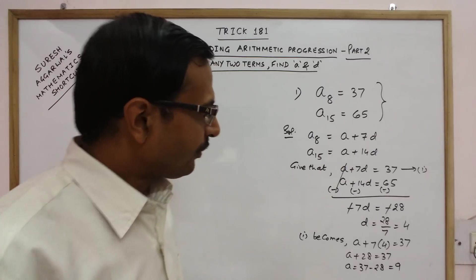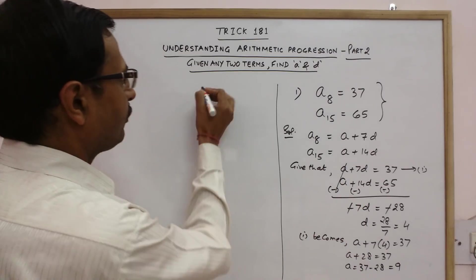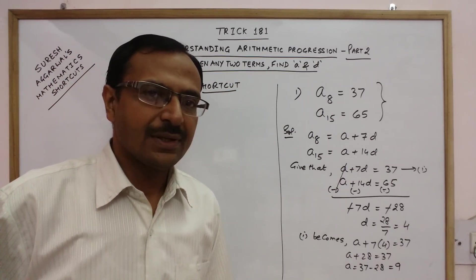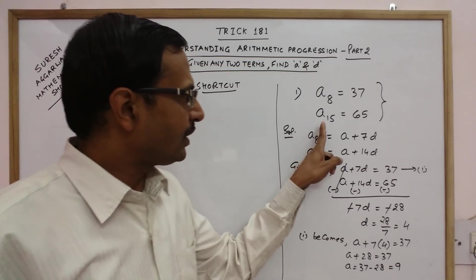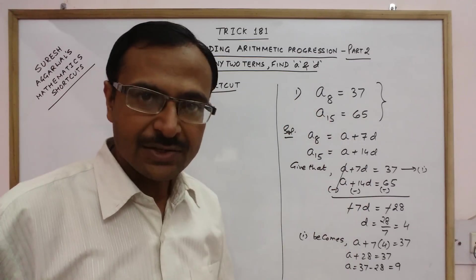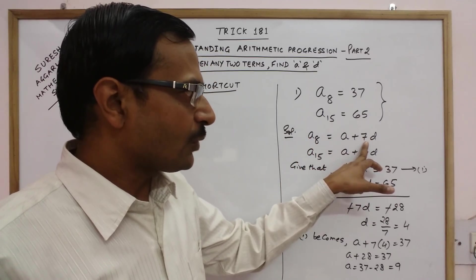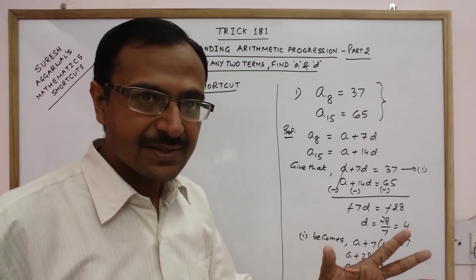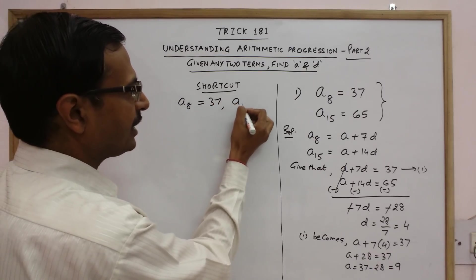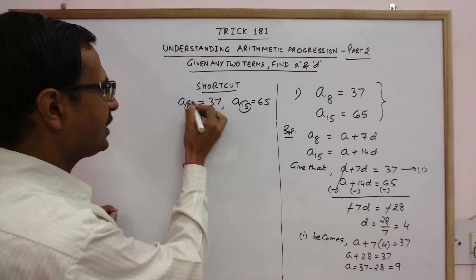So you see the value of A and D is obtained through this traditional approach but for shortcut you can solve this in just two or three steps. Now what is the shortcut? First of all take the second largest term that is A8 is the smaller term and A15 is the larger term. So just reduce the coefficient of this D. You know this coefficient is always less than this that is 1 less.